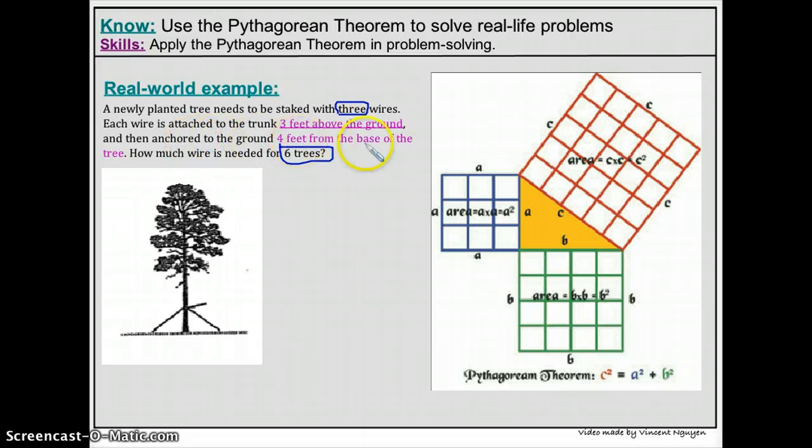And then it says the wire is anchored to the ground four feet from the base of the tree. So here's the wire and it's anchored. That means they run the wire to the ground and they anchor it right there. And that distance right there is four feet from the base of the tree. So far we have the legs of the right triangle. Because if I draw my right triangle, it will look something like that.